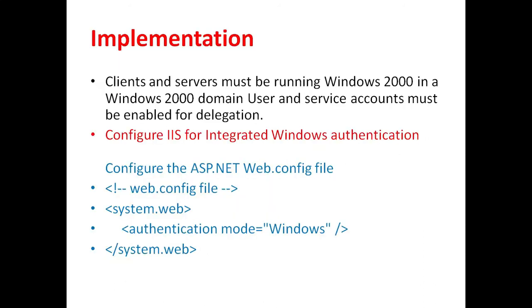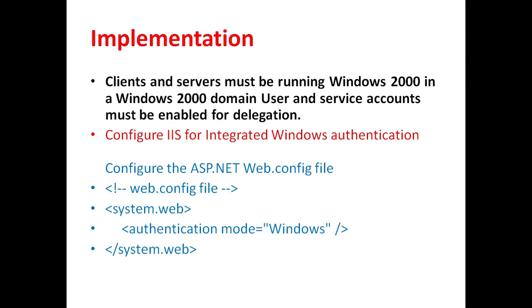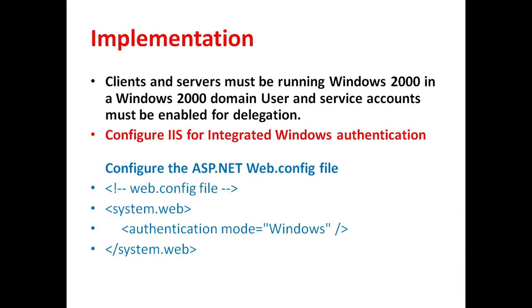To implement integrated Windows authentication, clients and servers must be running on Windows 2000. In Windows 2000, domain user and service accounts must be enabled for delegation. Configure IIS for integrated Windows authentication, and then configure the ASP.NET web.config file — under system.web, set the authentication mode equal to Windows.